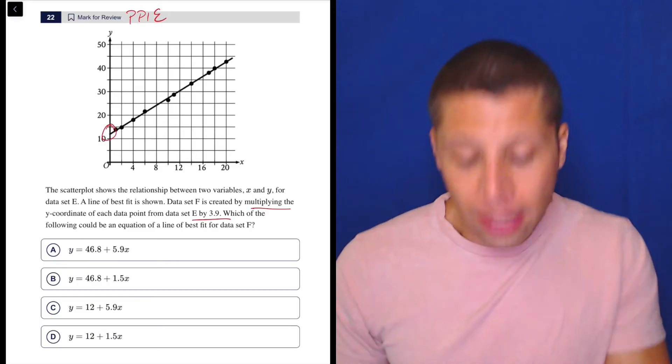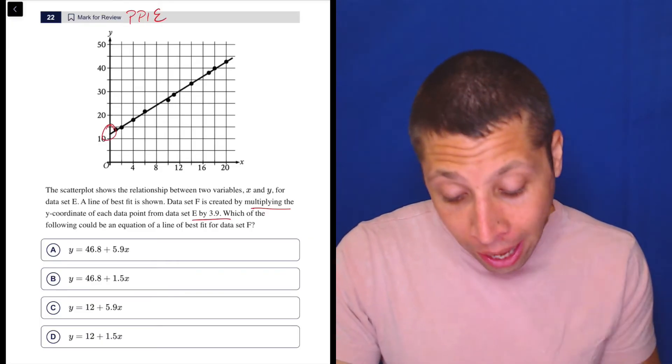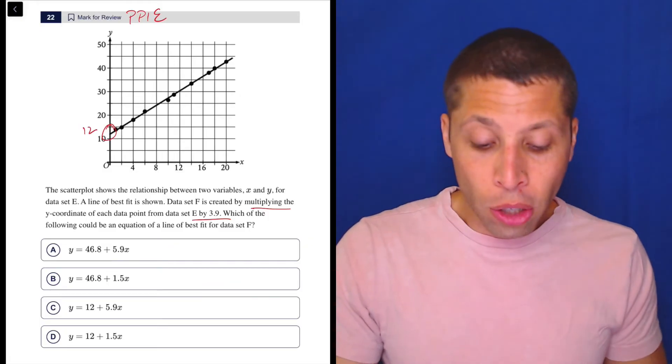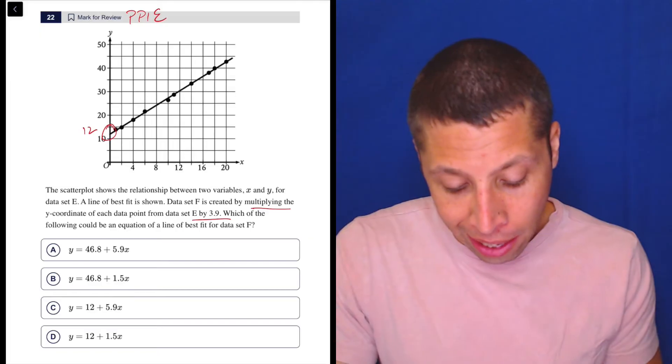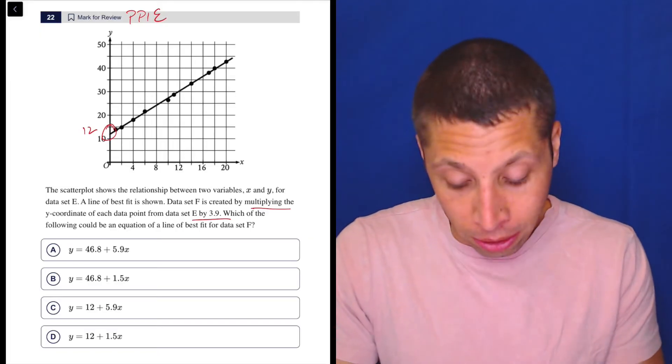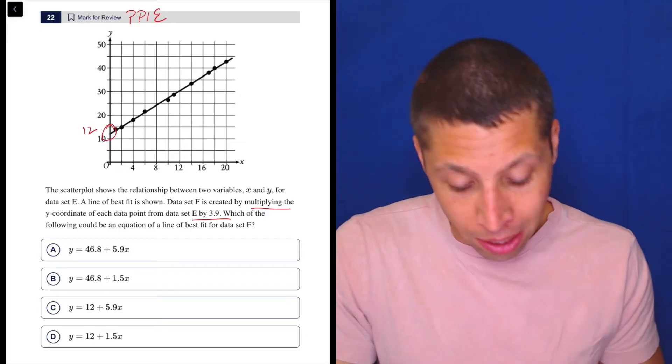Let's start with a simple point like the Y intercept. Right now, the Y intercept looks to be something like, I don't know, 12. So we have to just do what they told us—we're going to multiply that by 3.9. So we can use the calculator here, but let's say we're short on time. Here's a case where you could do a little rounding. Instead of 3.9, let's make it 4. So 12 times 4 is 48.